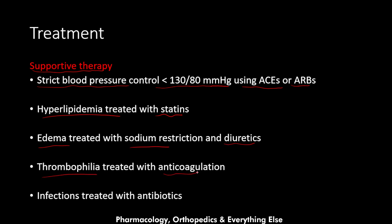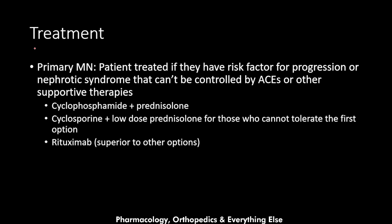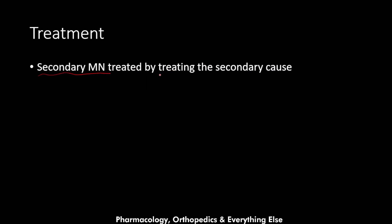Hyperlipidemia is treated with statins, edema with sodium restriction and diuretics, thrombophilia with anticoagulation, and infections with antibiotics. For treatment: primary membranous is treated if the patient has risk factors for progression or has nephrotic syndrome uncontrolled by ACE inhibitors. First-line treatment is cyclophosphamide plus prednisolone. If the patient can't tolerate this, cyclosporine plus prednisolone is given. The third line is rituximab, which is superior to the other options but expensive. Secondary membranous is treated by addressing the secondary cause.